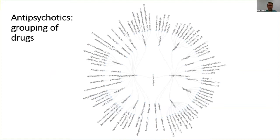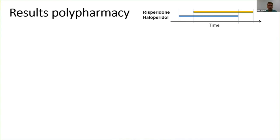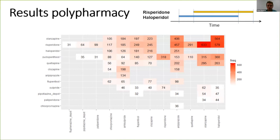We took all of this data and first grouped all the generic drug names present in the free text into 25 main antipsychotic medications prescribed at the Trust. We also restructured the data into a prescription-type format, sorted by date per patient ID, which makes it very easy to establish periods of polypharmacy. We created a heat map to see which drugs were co-prescribed most and which had not been co-prescribed together.